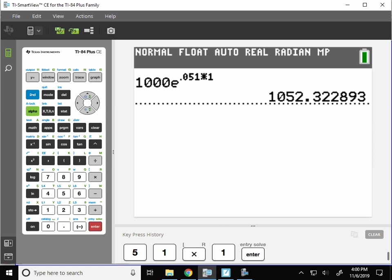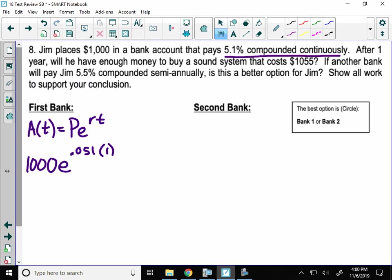And it turns out, oh, Jim will only have $1,052.32. That is not enough money. Poor Jim, he can't buy his sound system. Let's see if bank two is any better for Jim, or if he just needs to find a way to get $55 more now.